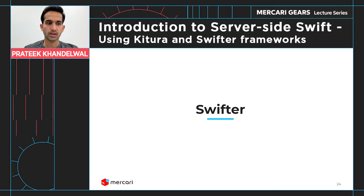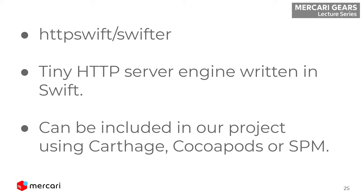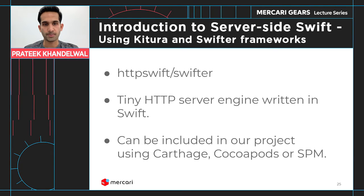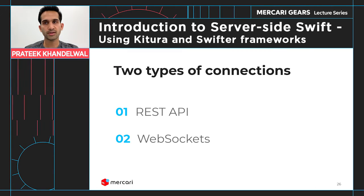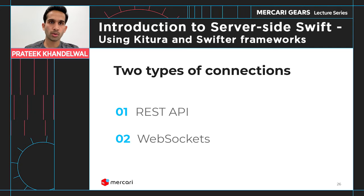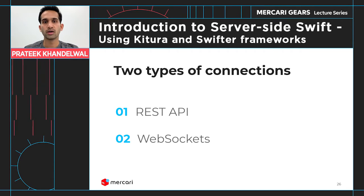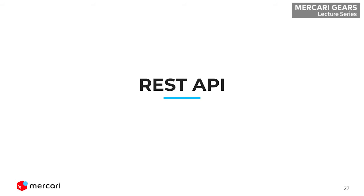Swifter is a library you can find on GitHub at http-swift/swifter. It is a very tiny HTTP server engine written in Swift. This framework is not very popular or widely used because it is small and suited only for small purposes. Sometimes we only need very basic server support, so we can use this lightweight framework. It can be included in a project using Carthage, CocoaPods, or Swift Package Manager. It supports both REST API connections and WebSocket connections.